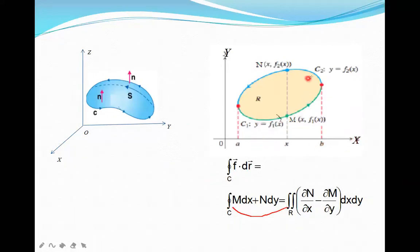In the case of Stokes theorem, it also gives the relation between line integral and surface integral. In Stokes theorem, the line integral over a closed curve C is defined as a double integral in 3 dimensions. This closed curve C is defined over a surface S.